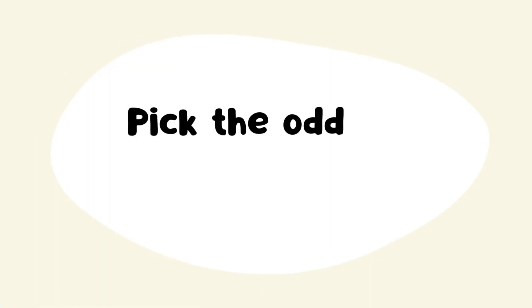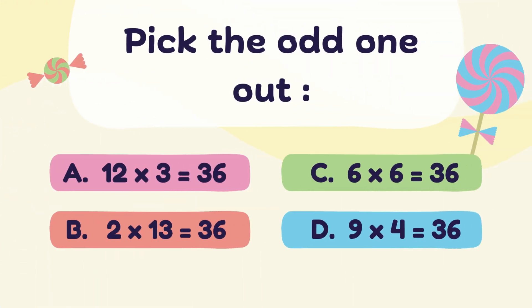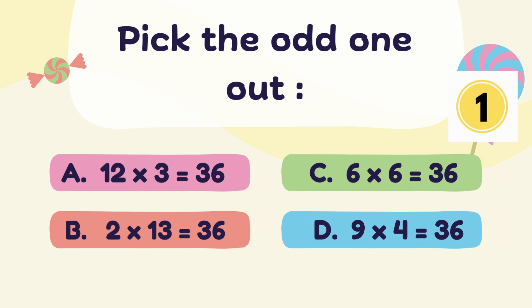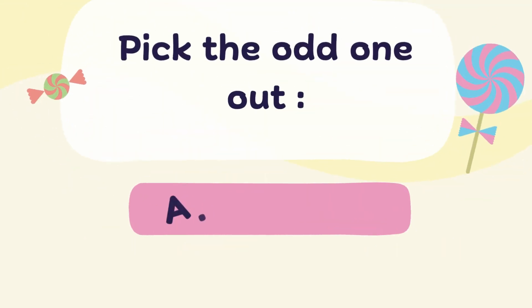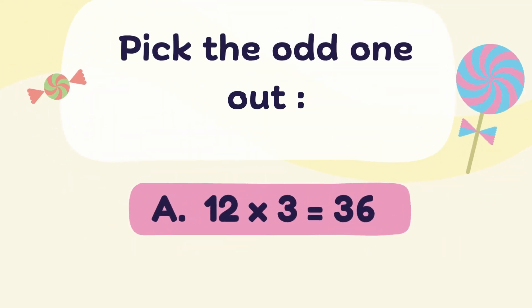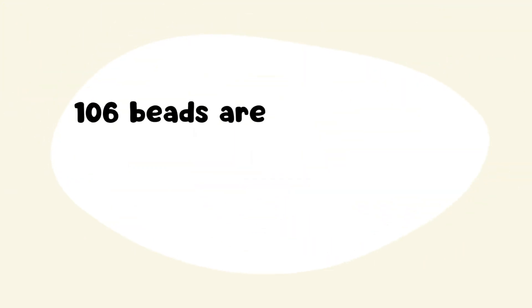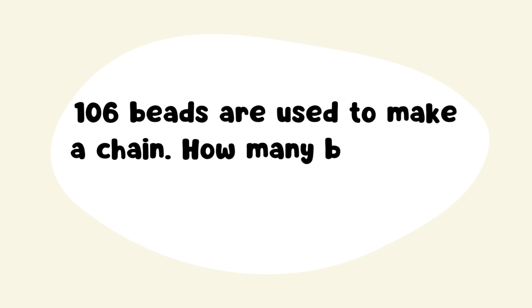Next question: Pick the odd one out. Select answer: 12 multiply 3 is equal to 36. Next question.